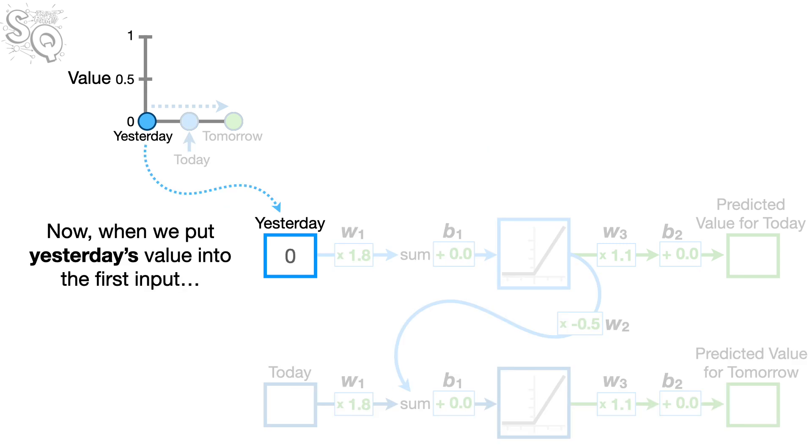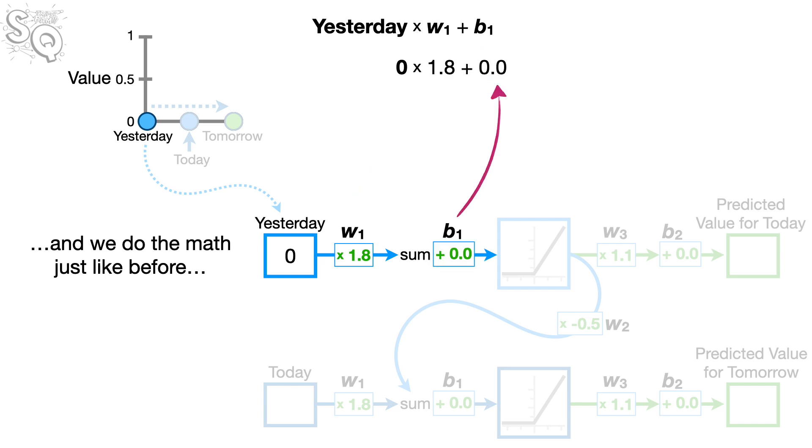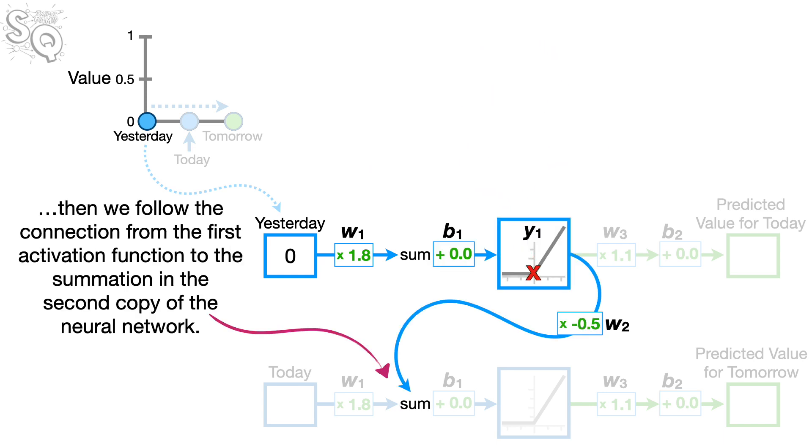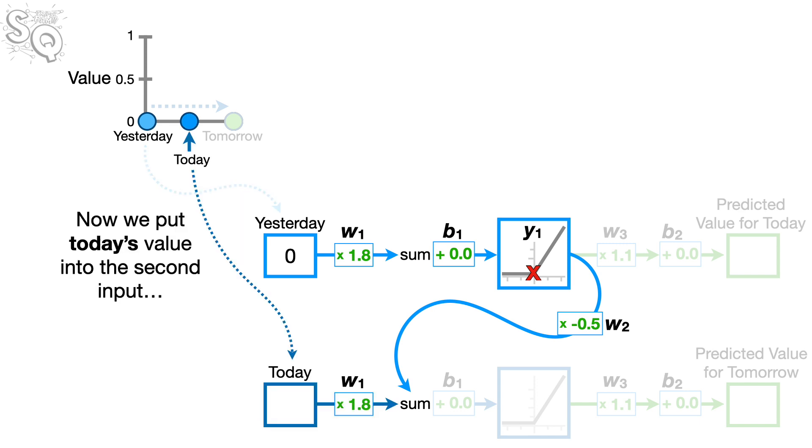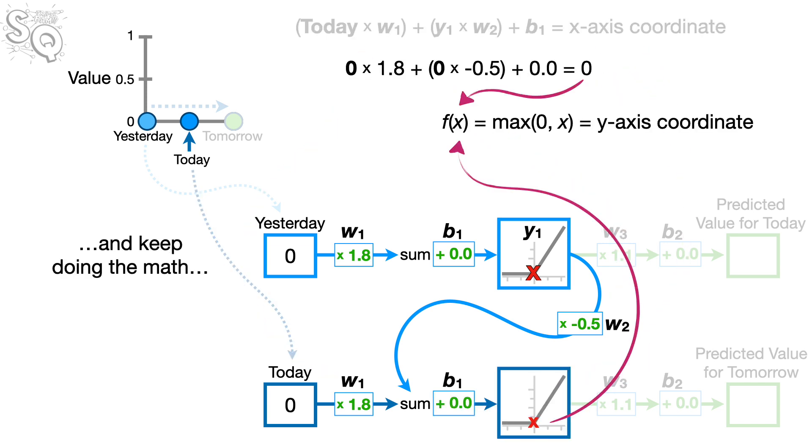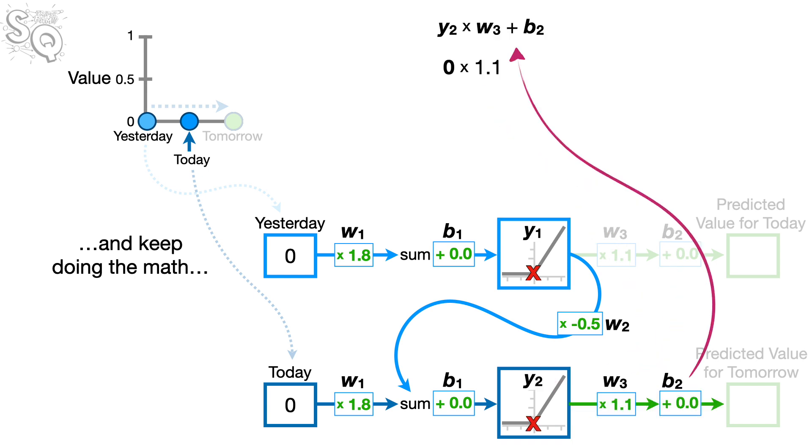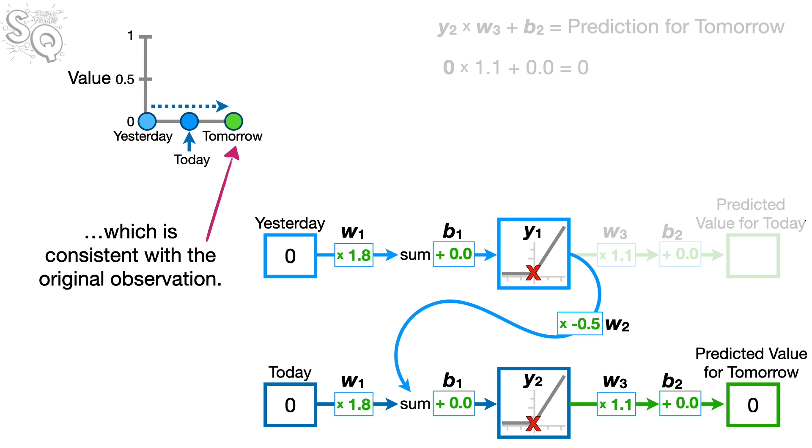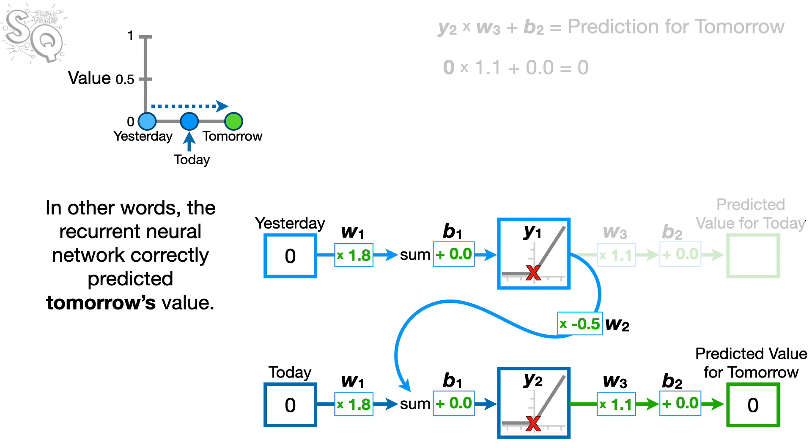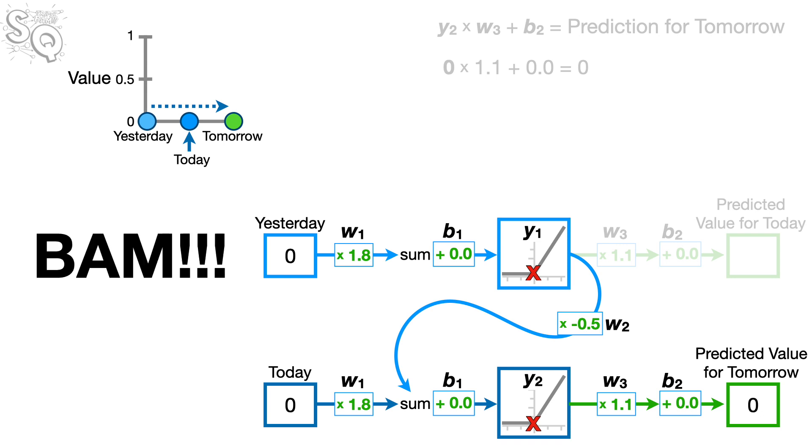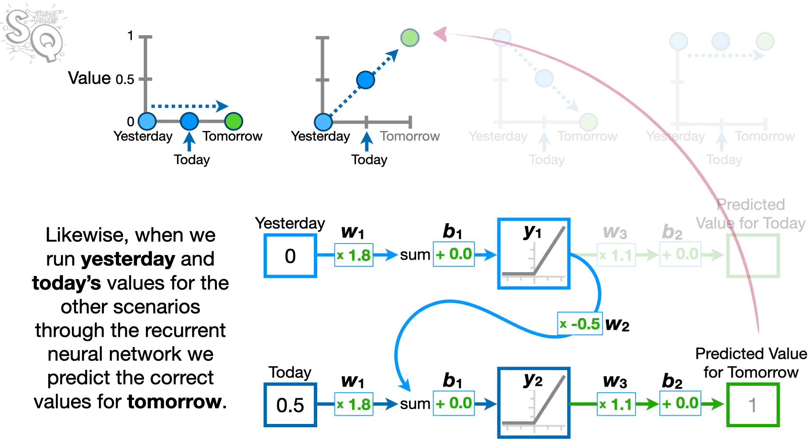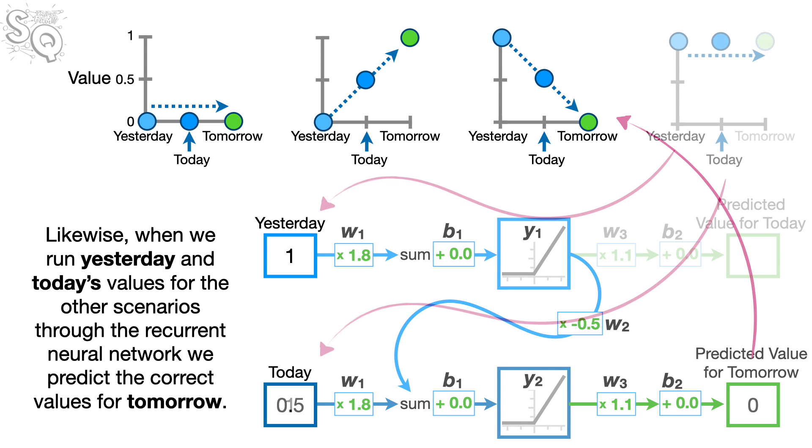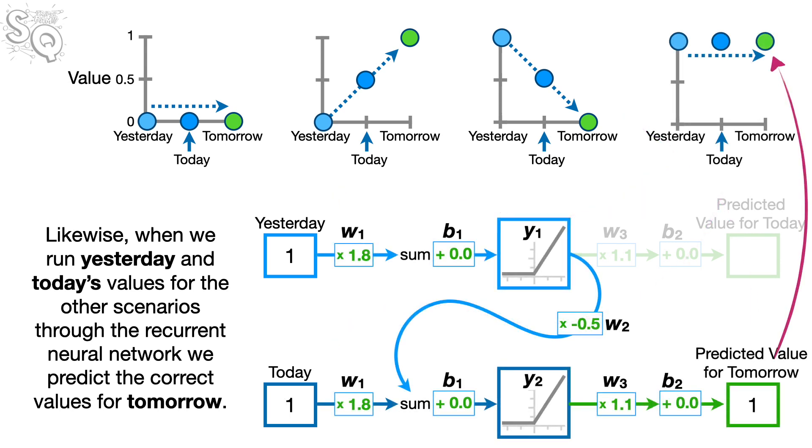And the connection between the first activation function and the second summation allows both yesterday and today's values to influence the final output, which gives us the predicted value for tomorrow. Now, when we put yesterday's value into the first input, and we do the math just like before, bidi-bip-bip-bip-bip-bip-bip-bip-bip-bip-bip, then we follow the connection from the first activation function to the summation in the second copy of the neural network. Now, we put today's value into the second input and keep doing the math. And that gives us the predicted value for tomorrow, zero, which is consistent with the original observation. In other words, the recurrent neural network correctly predicted tomorrow's value. BAM! Likewise, when we run yesterday and today's values for the other scenarios through the recurrent neural network, we predict the correct values for tomorrow. Double BAM!